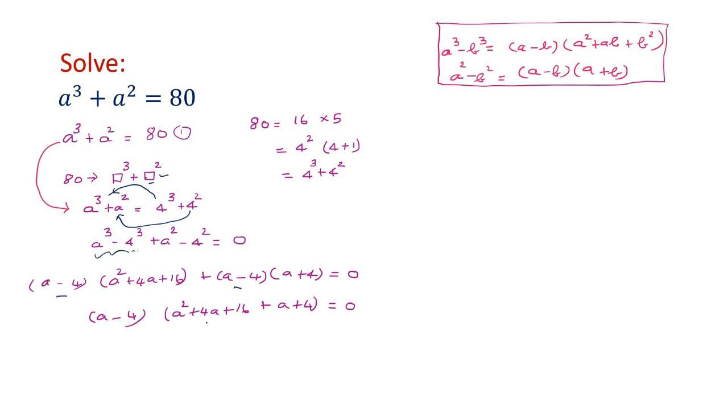Now you can see a² + 4a + 16 + a + 4 = 0. Now you can see there is 4a and a, that makes it 5a. So 16 and 4, that makes it 20. So (a - 4)(a² + 5a + 20) = 0. What is known as zero product property.